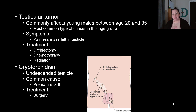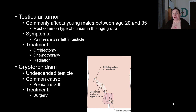Cryptorchidism — an undescended testicle — is common in premature births. The main treatment is surgery to bring the testicle down into the scrotum. If cryptorchidism is present and surgical intervention occurs, the patient should be monitored closely for higher risk of testicular tumors.